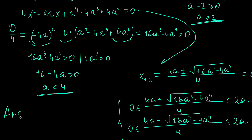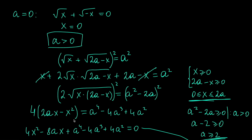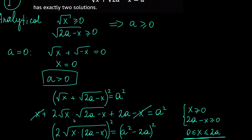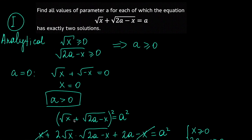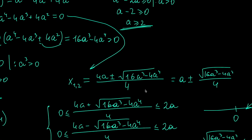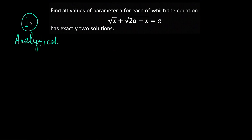So the answer is A ∈ [2, 4). That's it for the first solution — a straightforward analytical approach where we squared both sides twice, carefully tracking restrictions from the square roots and solving various inequalities. Now let's move on to our second solution.